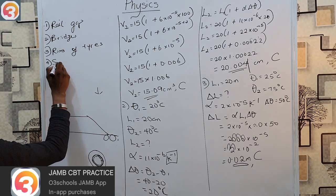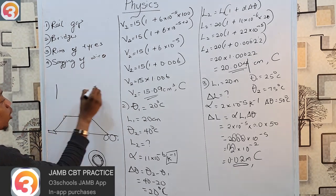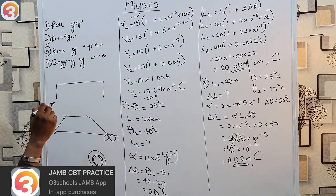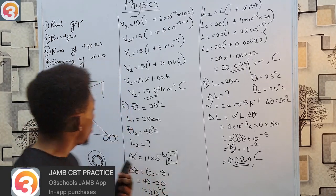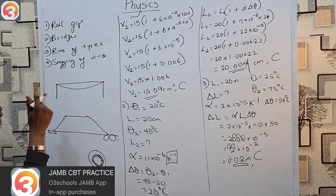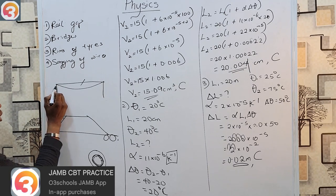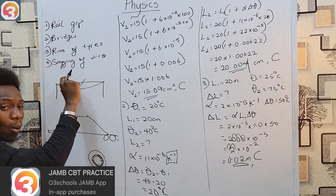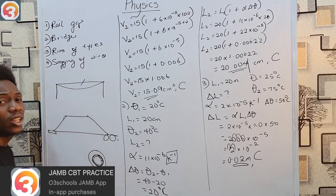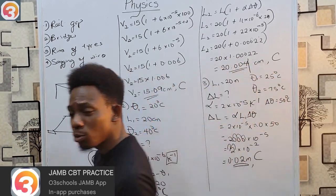Sagging of overhead wires is another consequence of expansion. Wires are hung with a slight sag so that in cold weather when they contract, there is allowance — if they were hung straight they would snap. When temperature rises, they expand back to the sagging position.